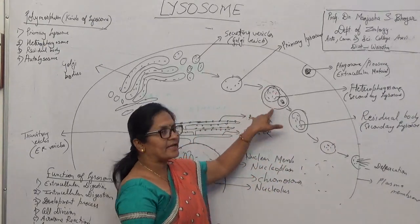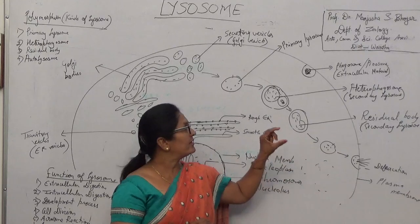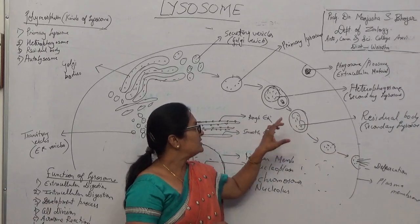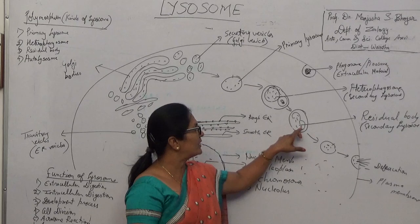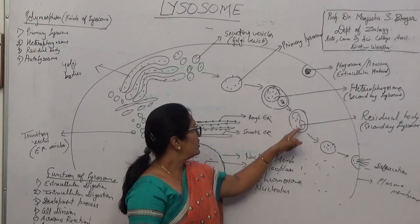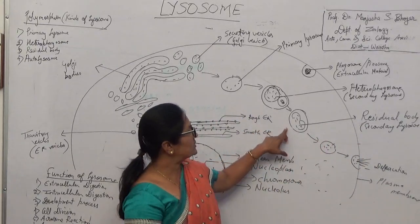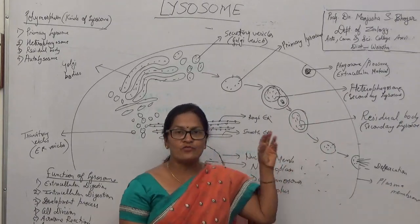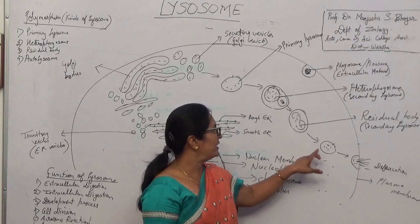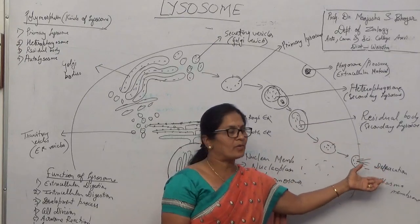Sometimes, when the digestion takes place, if the Lysosome enzyme is in insufficient amount, then the digestion is incomplete and the remnants of the food material remain inside this vesicle. The indigested material which is found in this vesicle is called as residual body. This residual body contains waste material. This waste material has to be excreted out of the membrane. So, this residual body comes through the plasma membrane, fuses with the plasma membrane, and this material is excreted out by exocytosis process.